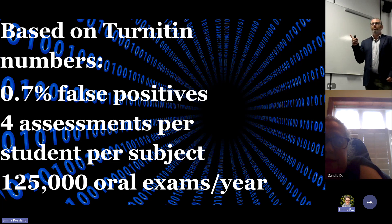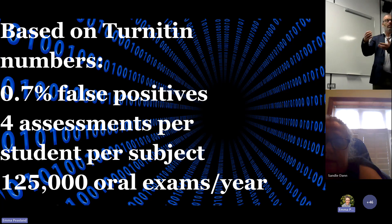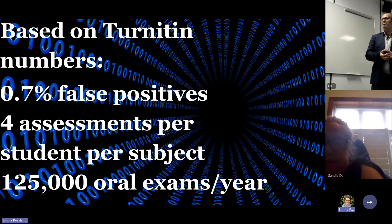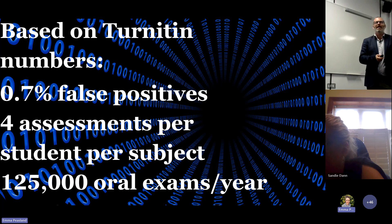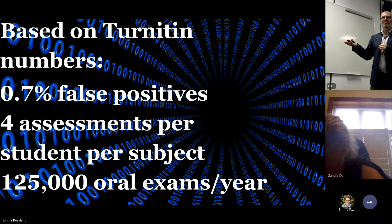To do the maths on this: in Australia there are approximately a million students. Turnitin's own numbers say they have 0.7% false positives. If we assume four assessments per student per subject and you go down the road of orally examining every flagged case, that means academics in Australia will have to run 125,000 unscheduled oral exams every year — about 60,000 a semester. I'm fairly sure your workload models don't account for that. That leaves you at a bit of a crisis — you either pour your own personal time into this problem or you close your eyes and the risk rises.